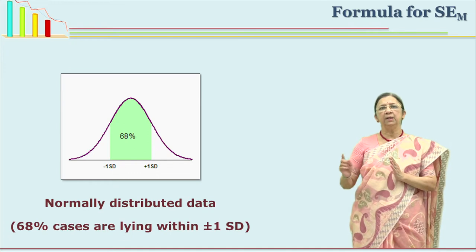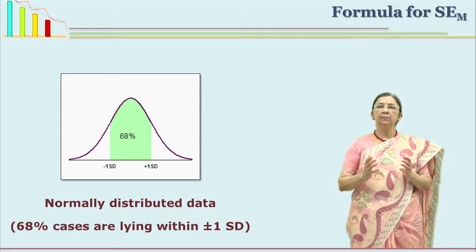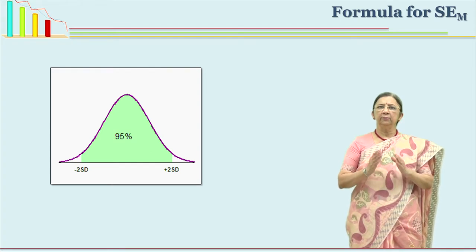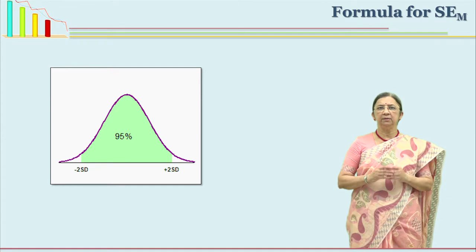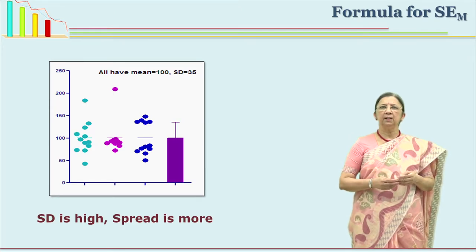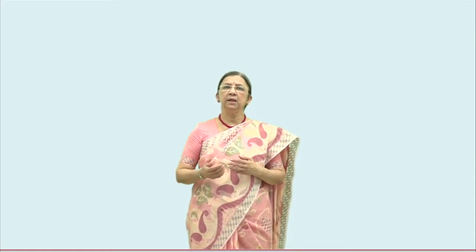On the left-hand side you have minus 1 standard deviation, and on the right-hand side you have plus 1 standard deviation. Within this, 68 percent of your cases lie. If you see the next diagram, for a normally distributed population, from plus 2 to minus 2 standard deviations from the mean, almost 95 percent of cases are covered. If the cases are very scattered, that means SD is very high and it is not a normally distributed sample. Keep this concept in mind, because standard error of mean is also a type of standard deviation — but of the population.